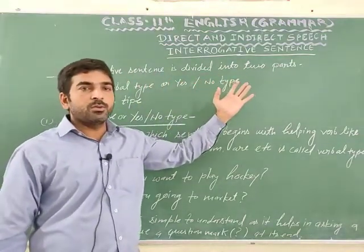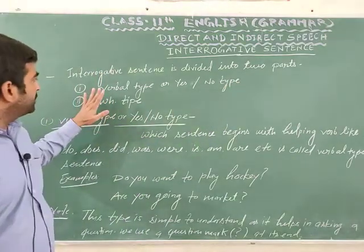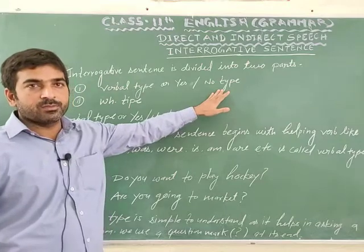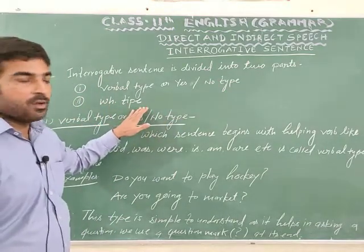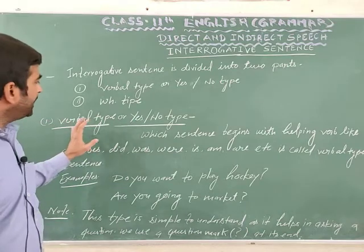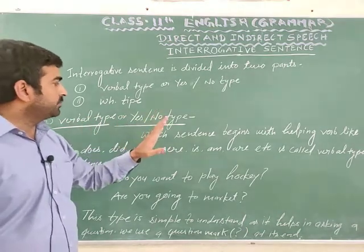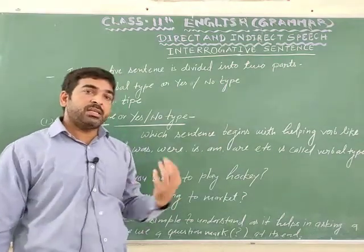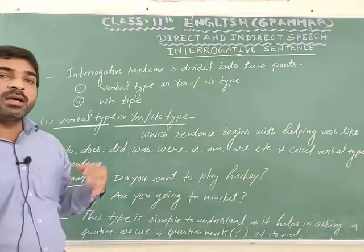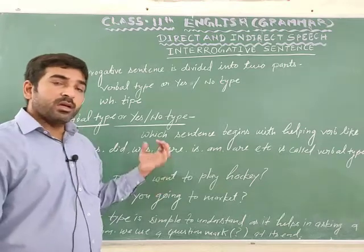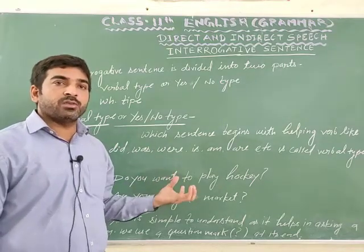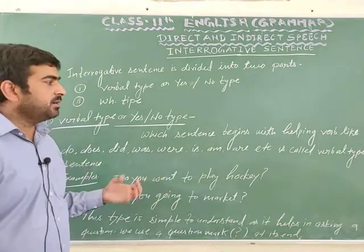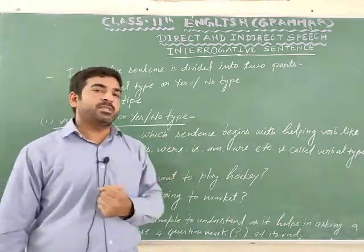The first type is verbal type, also called yes-or-no type sentence. The second type is WH type. A verbal type sentence is one which begins with a helping verb like does, do, is, are, was, were, has, have, etc.